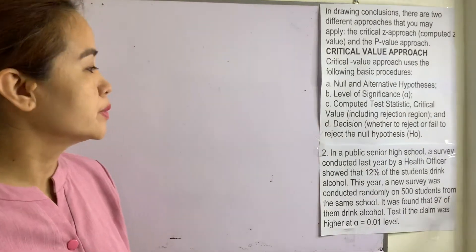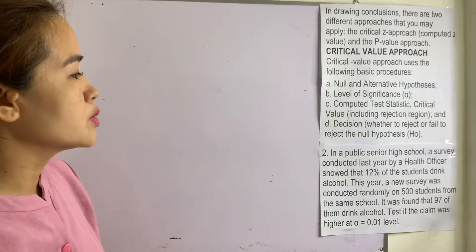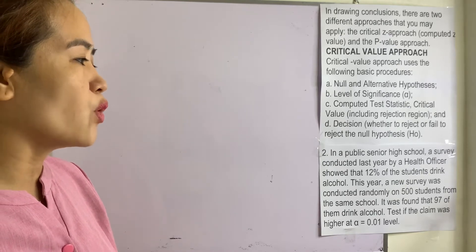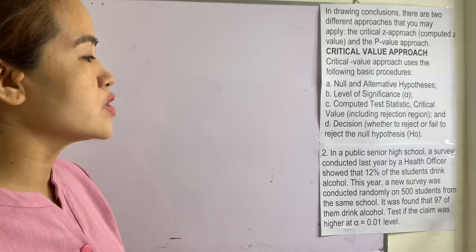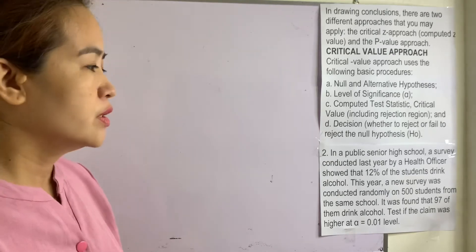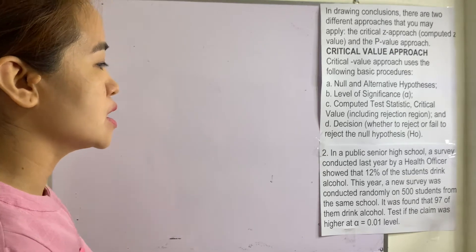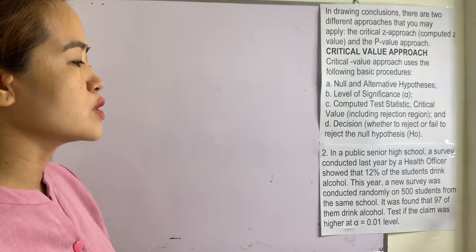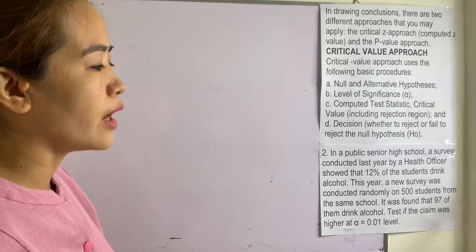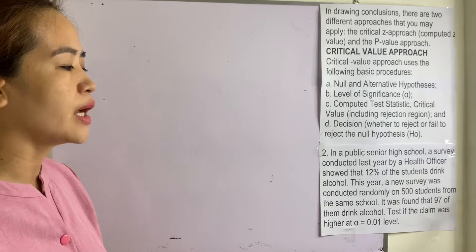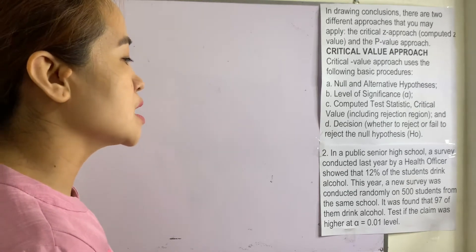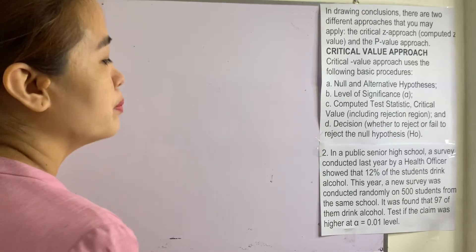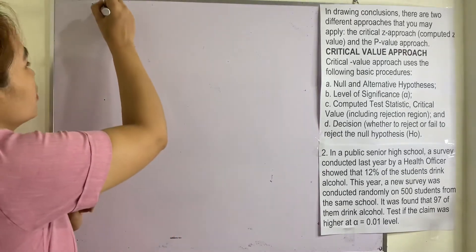Example number two: in a public senior high school, a survey conducted last year by a health officer showed that 12% of the students drink alcohol. This year, a new survey was conducted randomly on 500 students from the same school, and it was found that 97 of them drink alcohol. Test if the claim is higher at alpha 0.01 level.